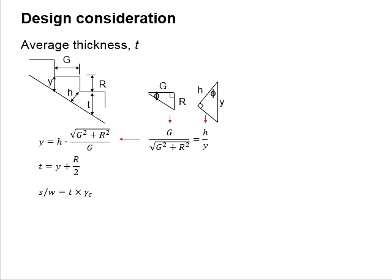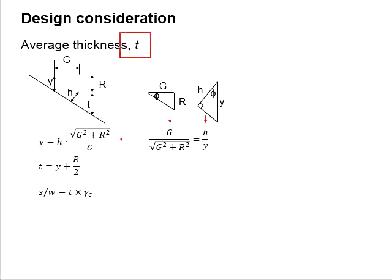However, due to gravity, the self-weight of the staircase acts vertically downward. Therefore, the effective thickness of the staircase, by definition, should be in the vertical direction. We need to first convert the waist h into the vertical distance y. Then, based on this vertical y, we estimate the average thickness of the staircase to calculate the self-weight, which is acquired by multiplying the average thickness by the unit width of the staircase.